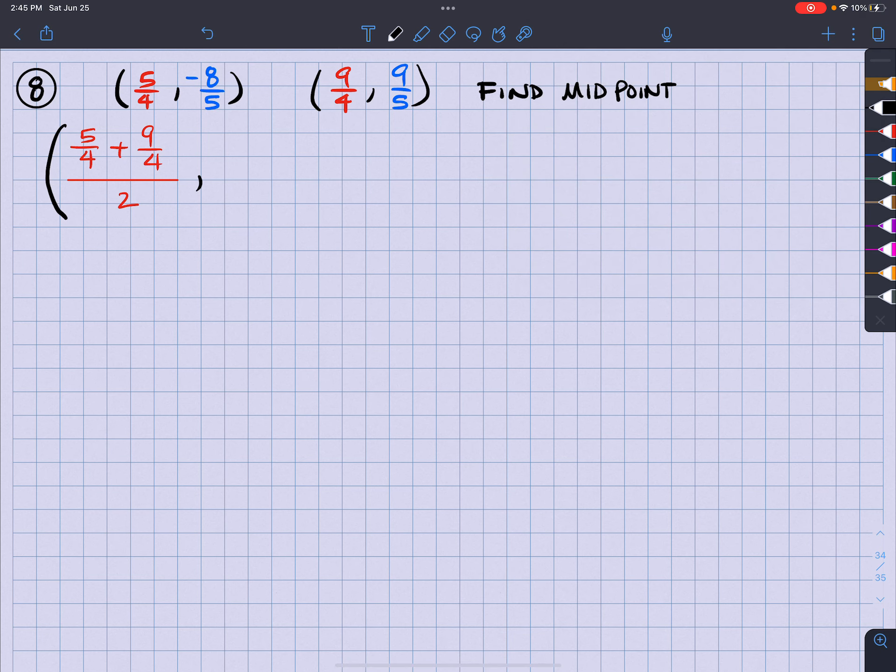Then I'm going to go ahead and do the same thing with the y values. So I have negative eight over five plus nine over five and I'm going to take that sum and divide that by two and that will be the average of my y's. And that's exactly what midpoint is.